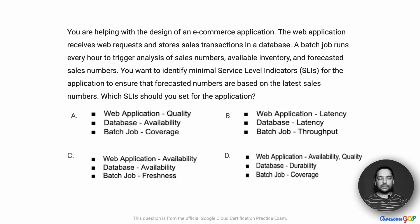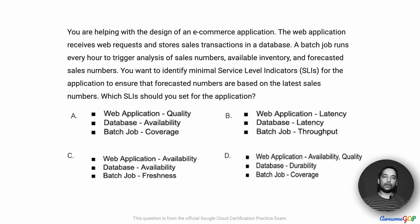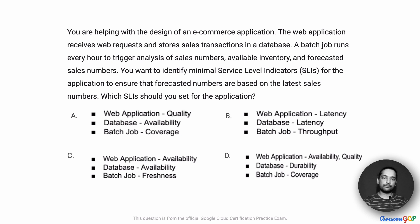In this DevOps situation, you are helping with the design of an ecommerce application. The web application receives web requests and stores sales transactions in a database. A batch job runs every hour to trigger analysis of sales numbers, available inventory, and forecasted sales numbers. You want to identify Minimal Service Level Indicators or SLIs for the application to ensure that forecasted numbers are based on the latest sales numbers. Which SLIs should you set for the application?